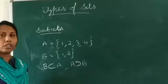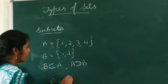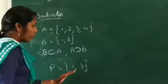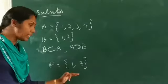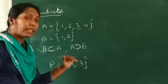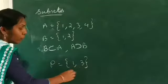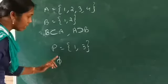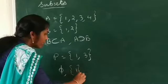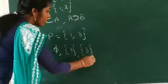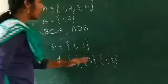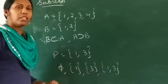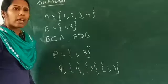Regarding subsets, we have to note the following points. If we have a set P equal to {1, 3}, the empty set (Ø) is a subset of the set P. That means Ø is a subset of every set. And the set itself is a subset of every set. If you want to write the subsets of set P, the following are the subsets: Ø, {1}, {3}, and {1, 3}. So, every set is a subset of itself, Ø is a subset of every set, and by splitting the elements we can make various other subsets.